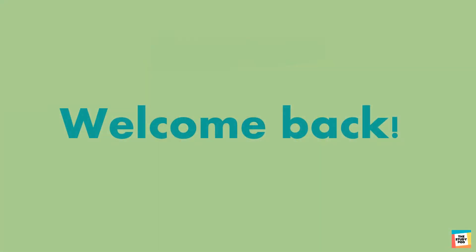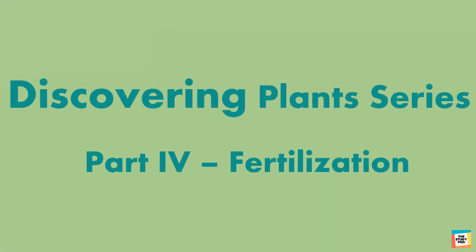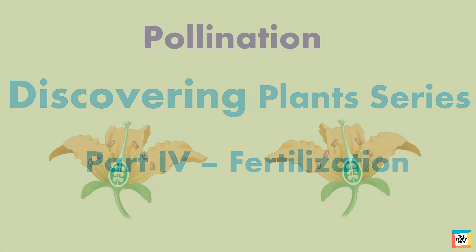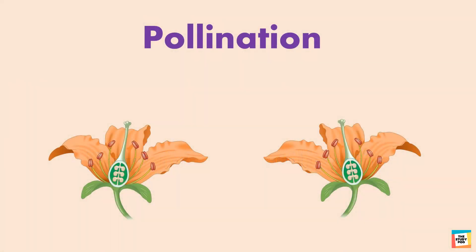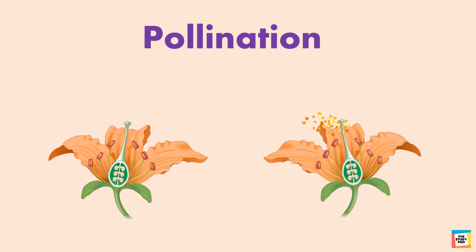Welcome back to the Discovering Plants series. In this video we will be learning how plants get fertilized. In the previous video we discussed about pollination, which is the transfer of pollen from the anther of one flower to the stigma of the same flower or another flower.